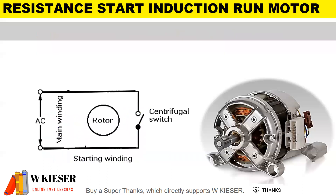Let's have a look at the first single phase AC motor: the resistance start induction run motor. Looking at the circuit diagram, we have a main winding also known as the run winding, a start winding also known as the auxiliary winding, a centrifugal switch, and a rotor.